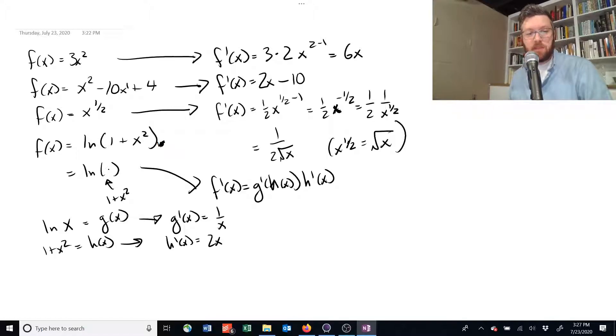Okay? And then we have x squared, and the derivative of that is 2x. Okay? So, now that we've got these two kind of pieces, we're going to plug them together using this formula up here.